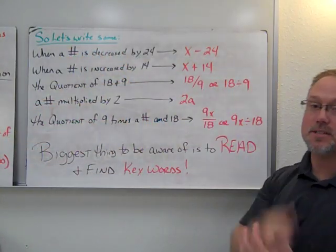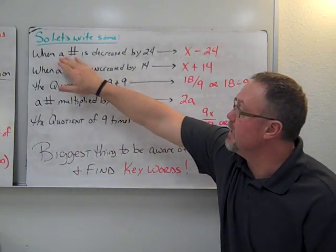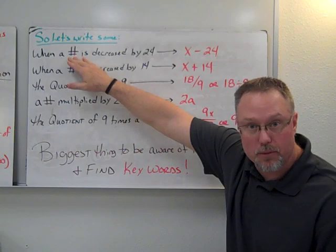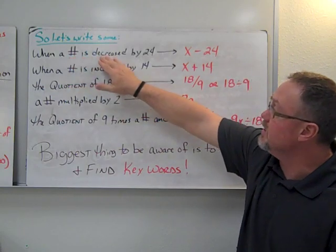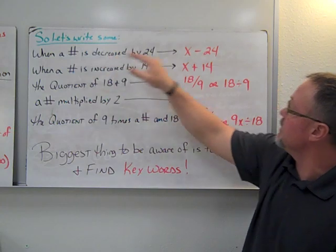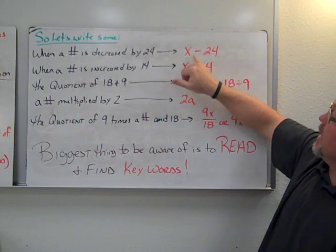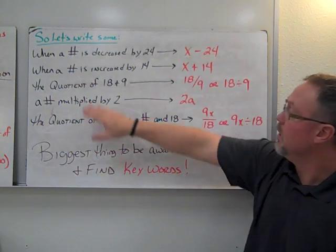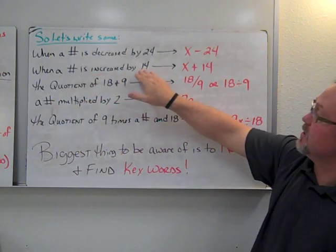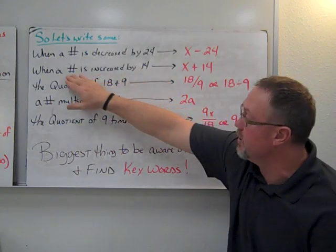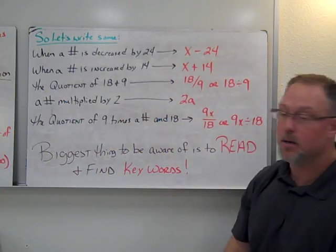Let's write some expressions. In our first example, 'when a number is decreased by 24' — since we don't know the number, we introduce a variable. 'Decreased' stands for subtraction, so we get x minus 24. For 'when a number is increased by 14,' increase means addition, giving us a variable plus 14.